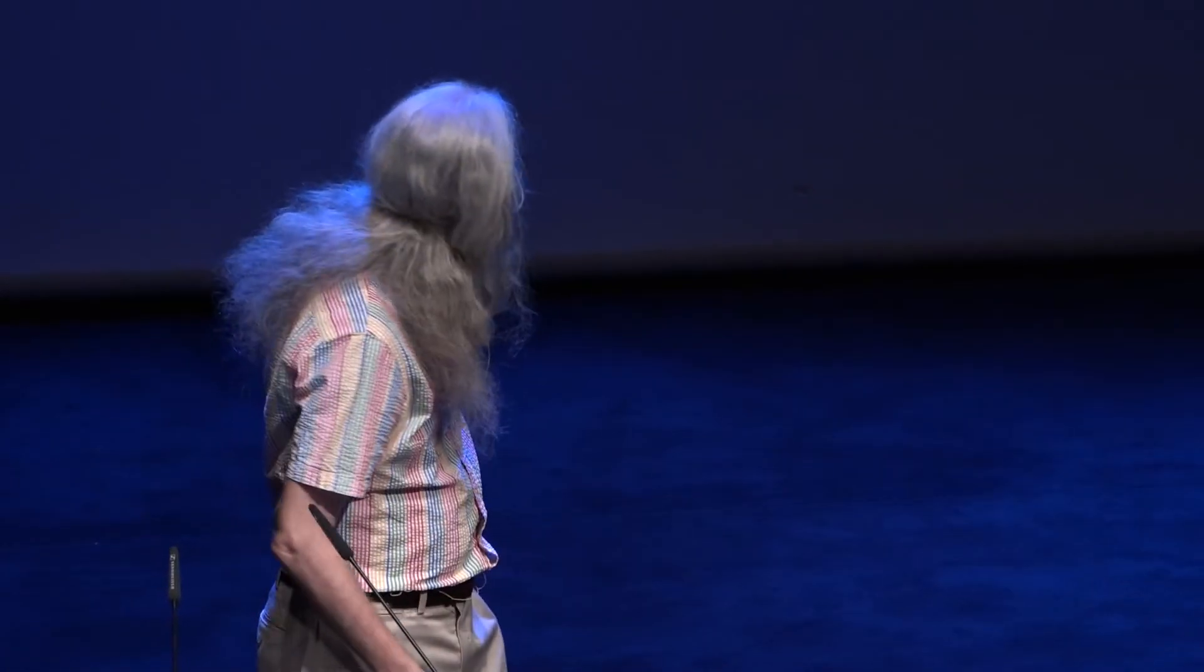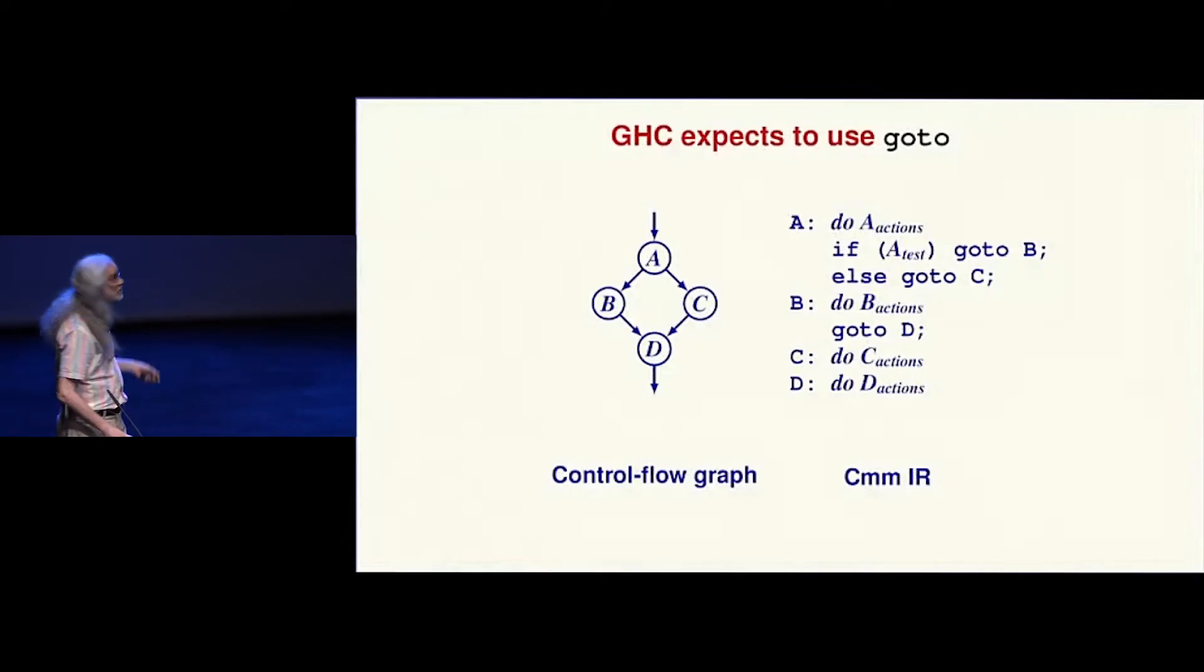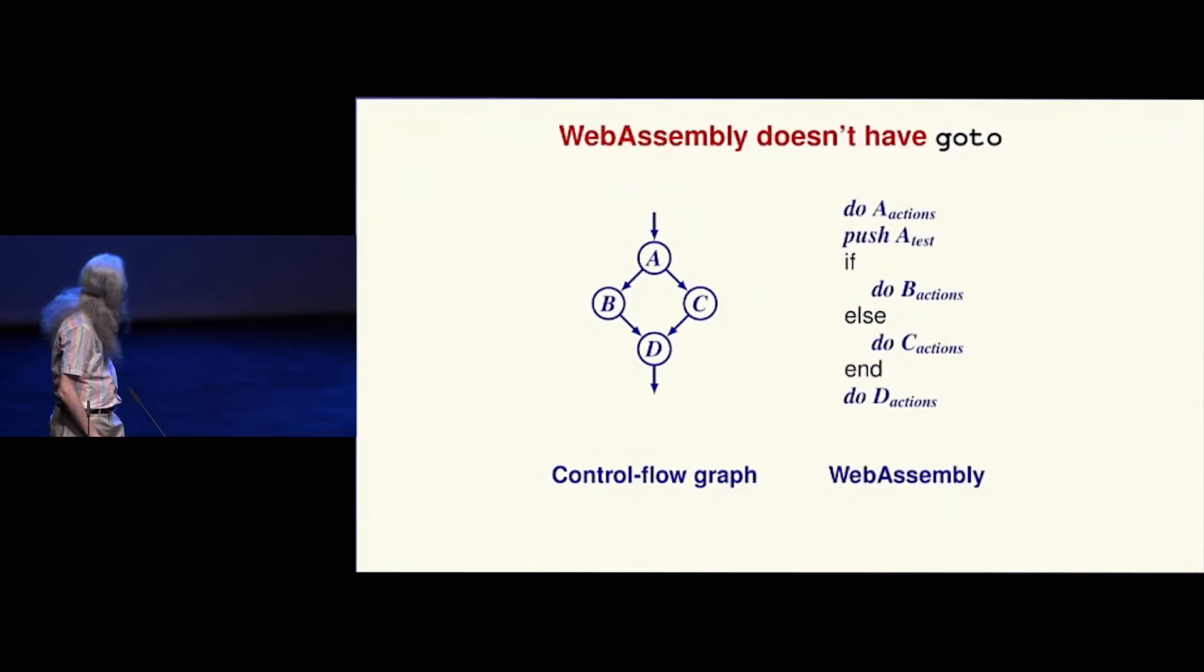GHC is designed to compile down to machine code, and it has a low-level intermediate form called Cmm that's represented as a control flow graph. I've shown that on the left, and it's got a textual representation on the right. All these goto statements—if A goto B, goto C—each one is designed to compile to a single machine instruction. But our target doesn't have goto.